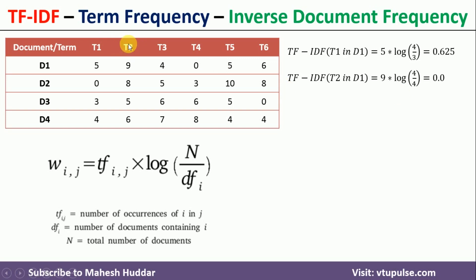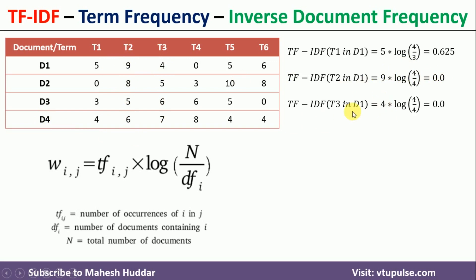For T2 in D1: the term frequency is 9, and T2 is present in all four documents, so TF-IDF = 9 × log(4/4) = 9 × 0 = 0. For T3 in D1: T3 appears 4 times and is also present in all four documents, so TF-IDF = 4 × log(4/4) = 0.